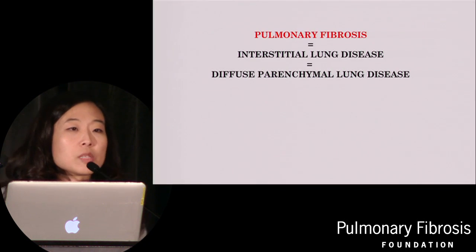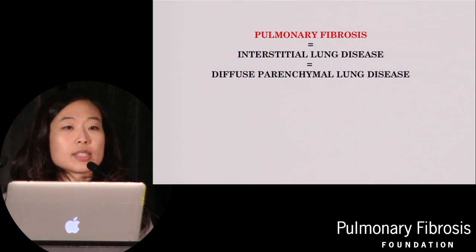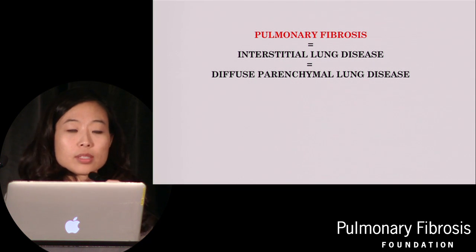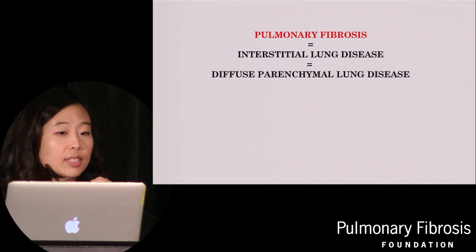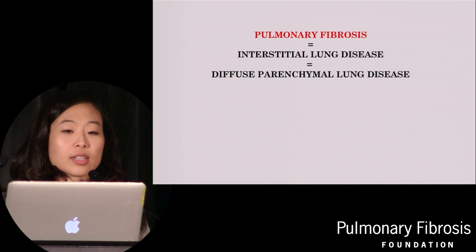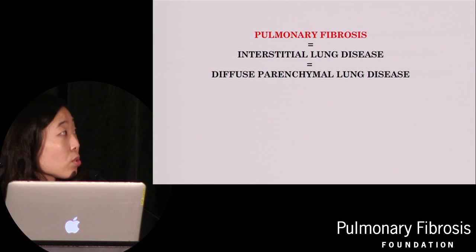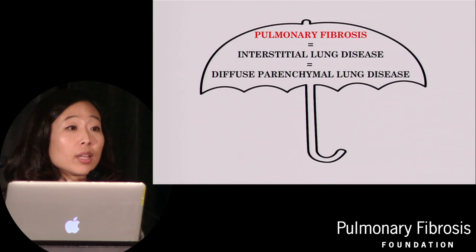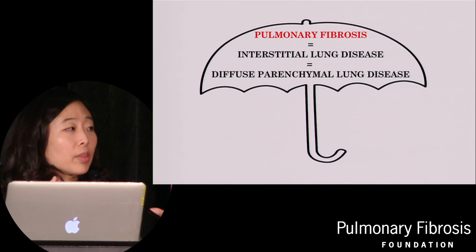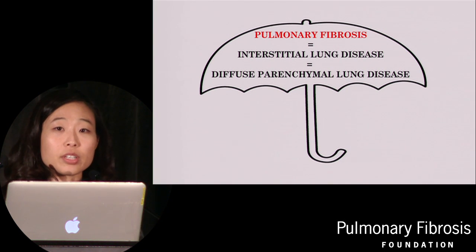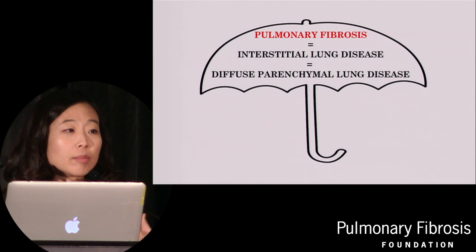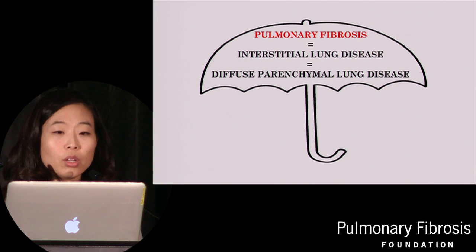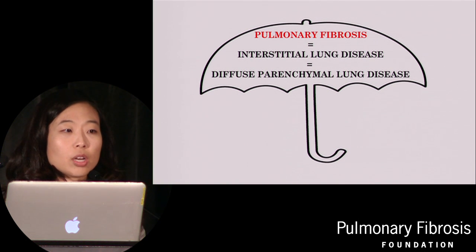Generally speaking, there are three major terms we use to describe pretty much the same thing. Pulmonary fibrosis is the same as interstitial lung disease, which is also used in the scientific literature as diffuse parenchymal lung disease. These terms are really an umbrella term that encompasses over 100 different conditions. The goal of specialists like myself is really to figure out which of these 100 diseases you have.